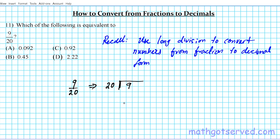So 9 divided by 20 is a problem. How many times does 20 go into 9? Well, 9 is smaller than 20, so 20 can't go into 9. What we're going to do is put a decimal point and add a zero.